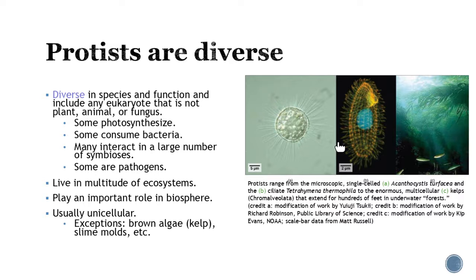Most of them are going to be the small little unicellular guys that you see right here, but we do have some exceptions. Think of brown algae like kelp. You didn't think—we thought that was probably a plant, but it's actually a protist. Slime molds fall in this category too. You thought that was a plant, but no, it's actually a protist. Really cool, huh?